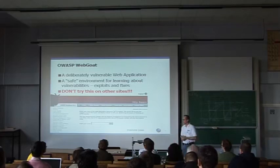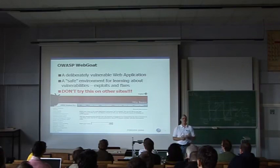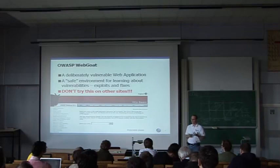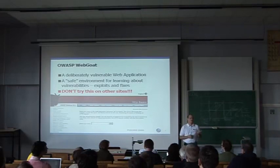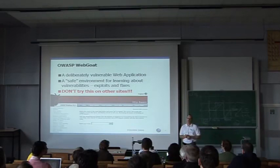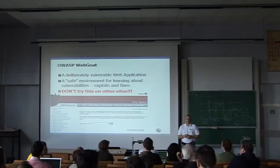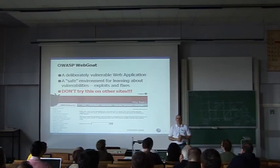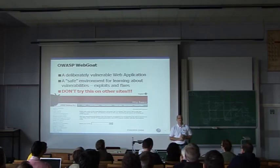Another tool from OWASP is WebGoat — a deliberately vulnerable Java web application. The idea is that it provides a safe environment for learning about security vulnerabilities. The obvious thing is that you can't just go out and test if an arbitrary site on the internet has security vulnerabilities, because you are likely to get yourself into all kinds of trouble. So don't try any of the things I'm going to show you today on sites that you do not have permission to test.